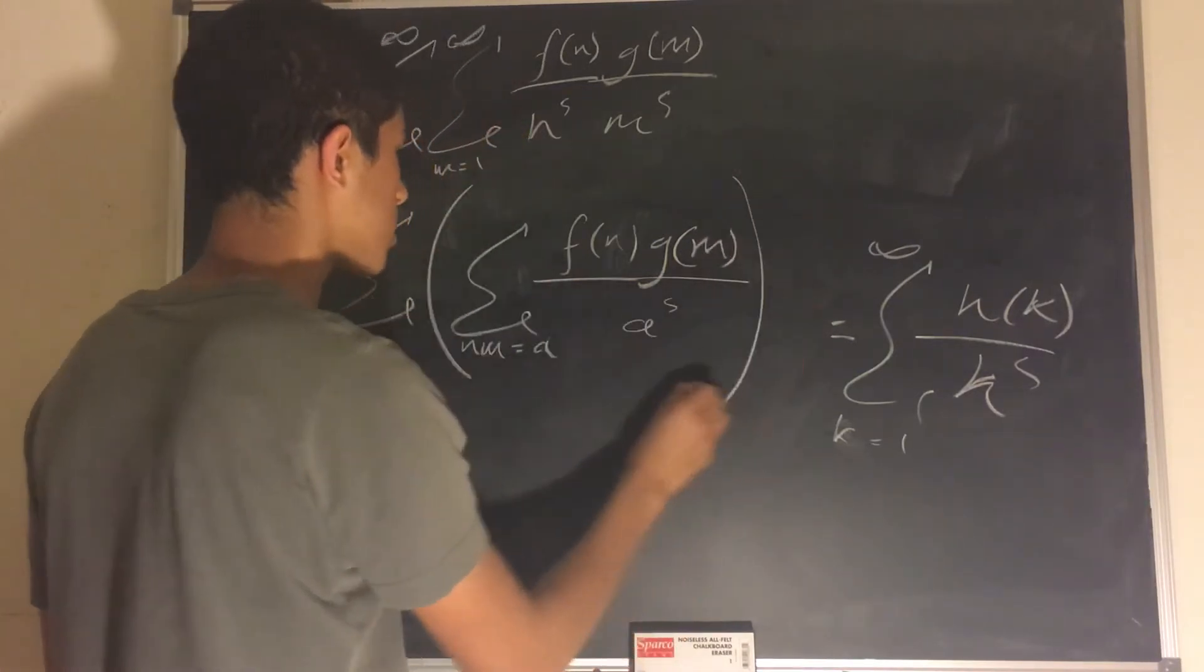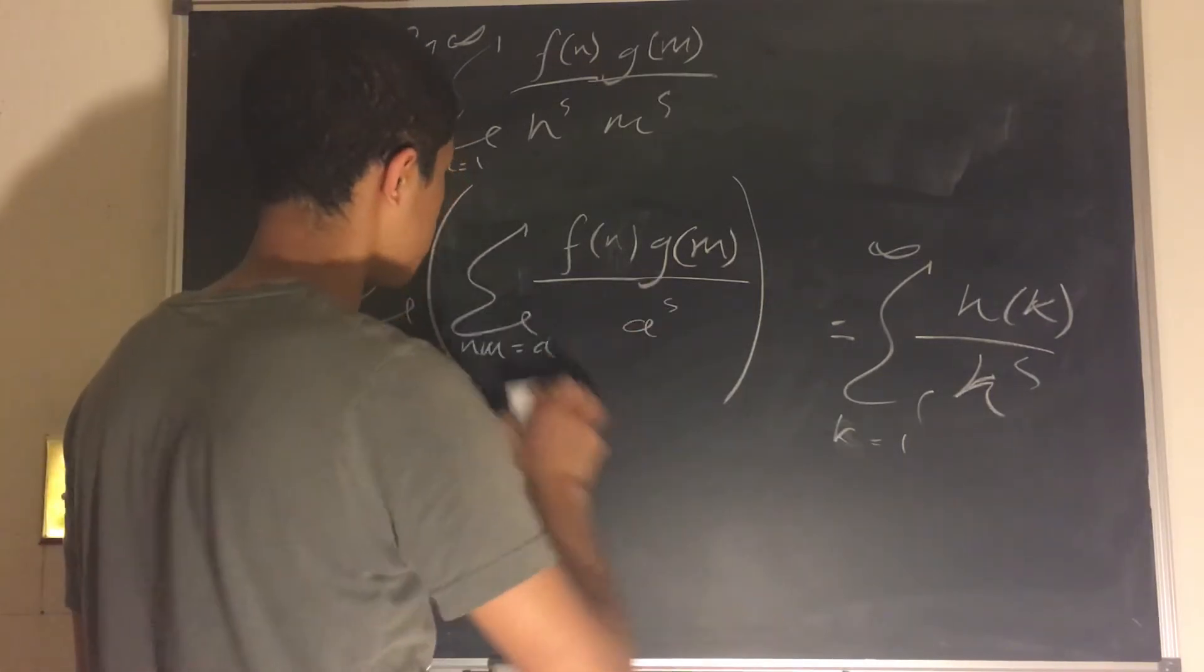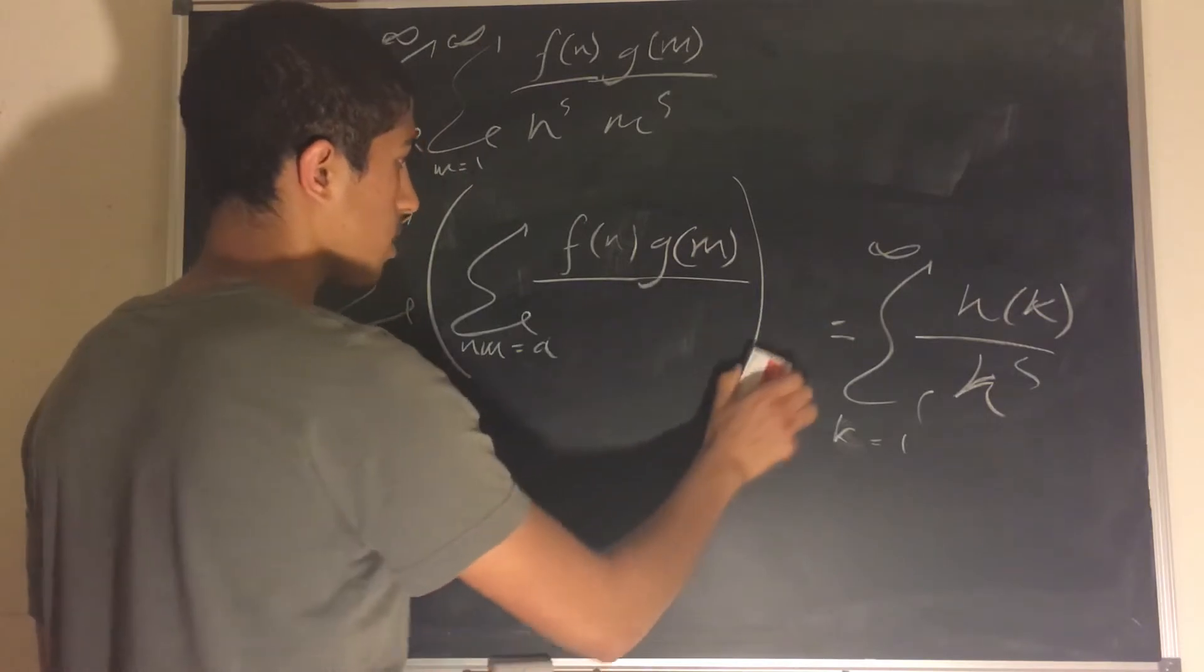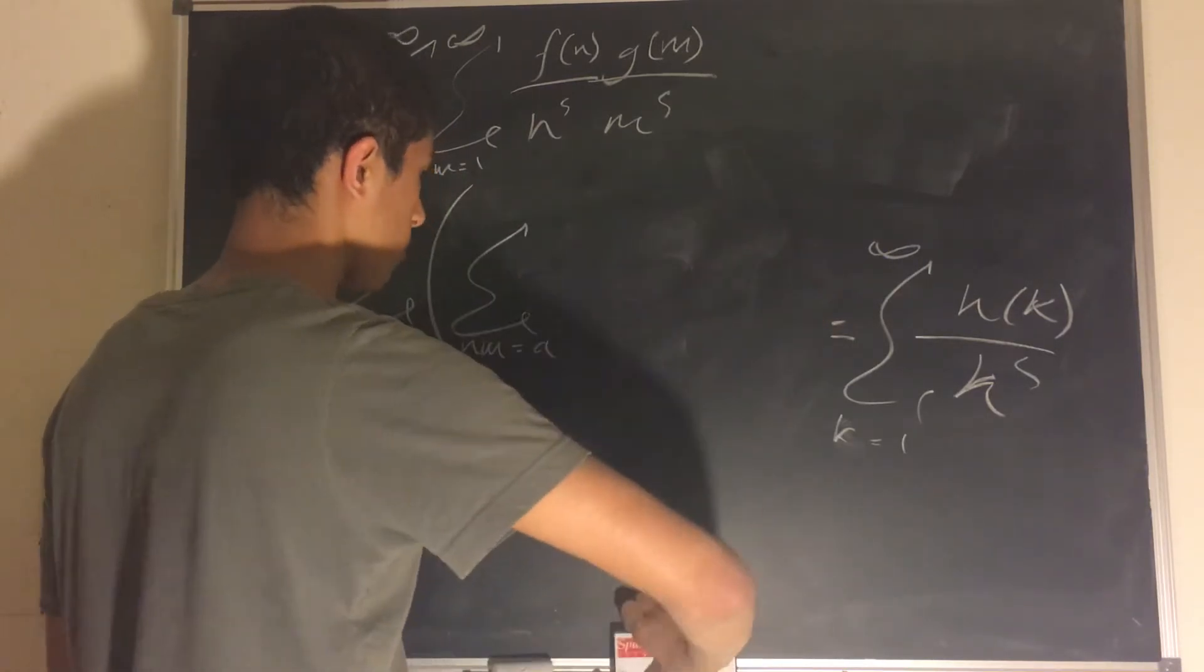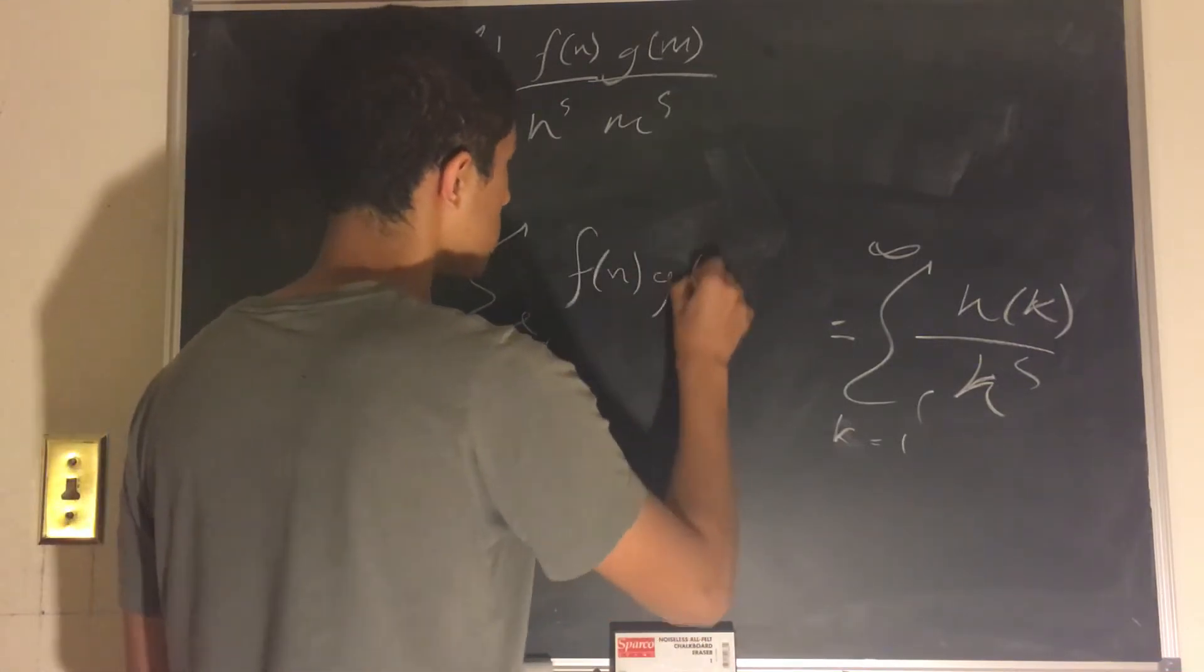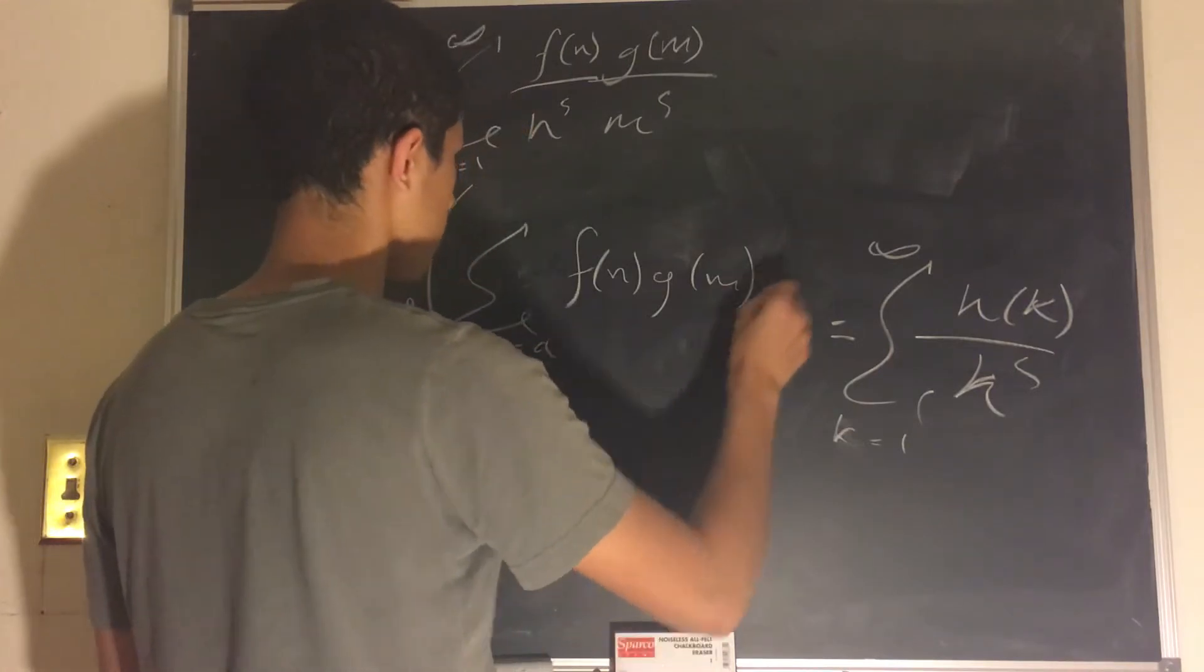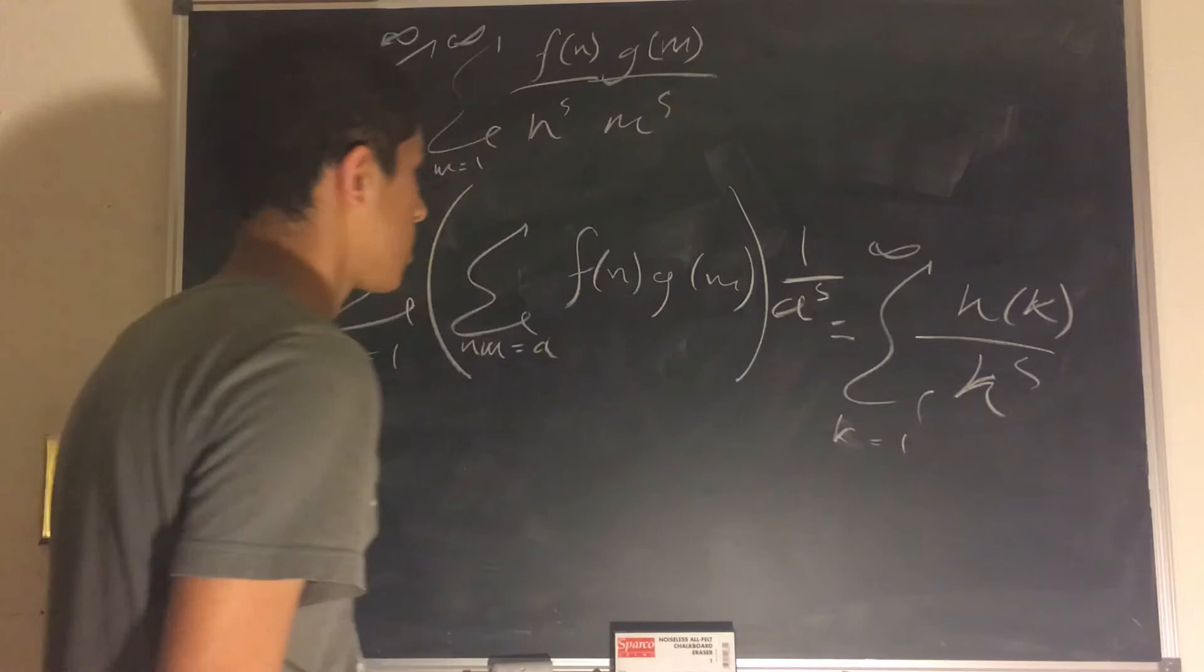And in fact, since we're doing a to the s and we're summing over a here, we can always just pull the a to the s outside of this second sum. So then we get sigma nm is equal to a, f of n, g of m, and then this times 1 over a to the power of s. Wonderful.